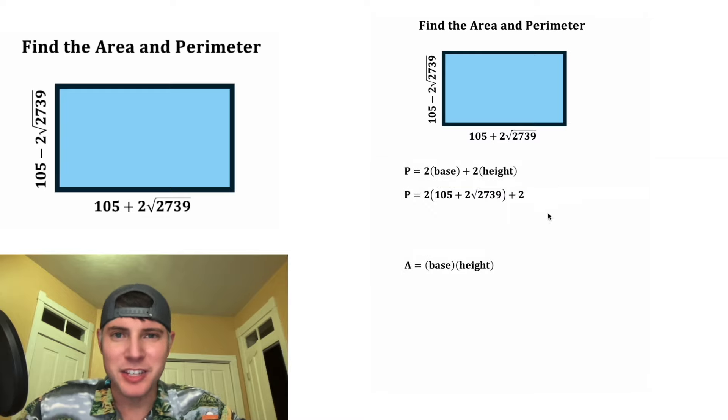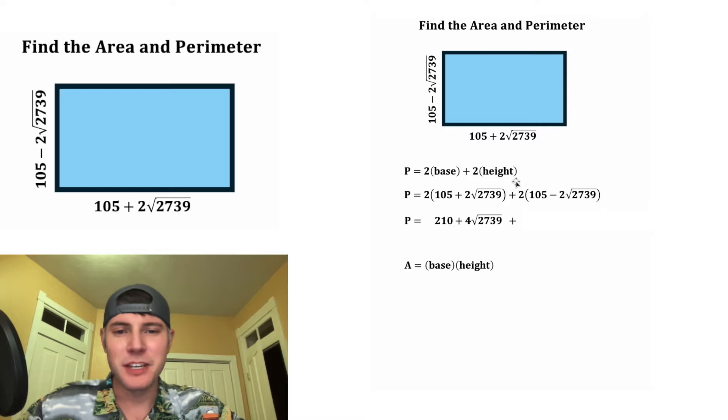Next we can distribute this 2 to both of these terms. 2 times 105 is 210, and 2 times 2√2739 is 4√2739. And then same thing here: 2 times 105 is 210, and 2 times negative 2√2739 is negative 4√2739.